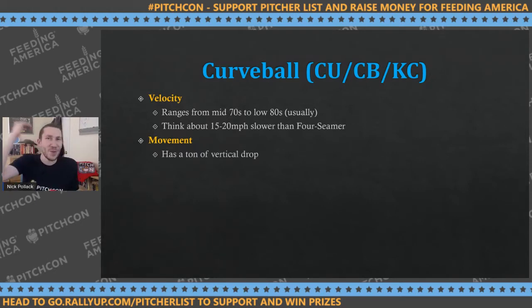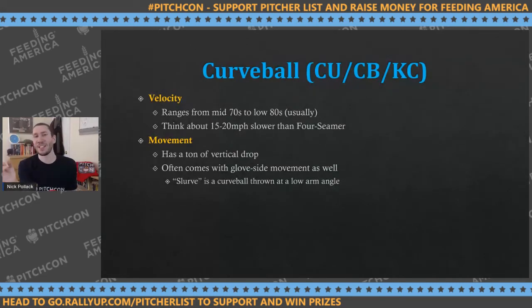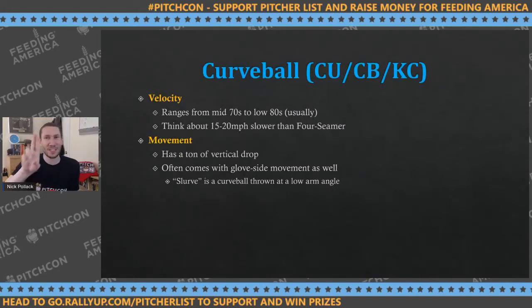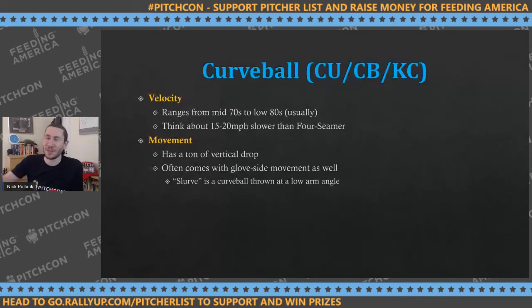Curveball movement: big hump to it, vertical drop. There are slurvy versions with glove-side movement — that's arm angle tilting the whole throw. If you're on the side, it's actually a slider. If your wrist is all the way down, you're staying on top like a slider and you'll get a hint of horizontal bend. That's where you get big slurvy curveballs like Jose Berrios. Rich Hill has such a low arm angle that it makes his curve look kind of like a slider — hence a slurve. But it's just a curveball.